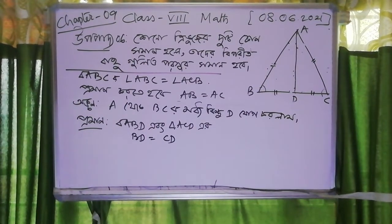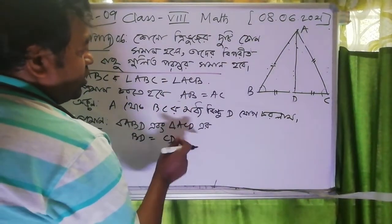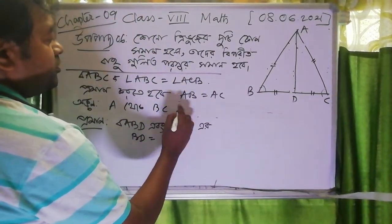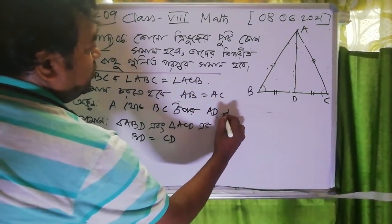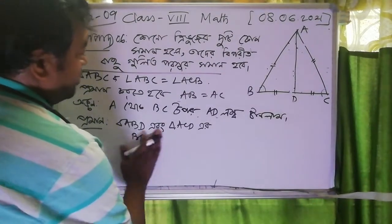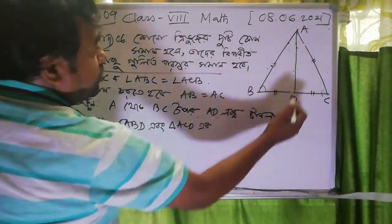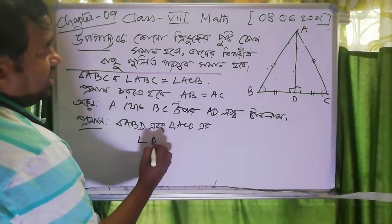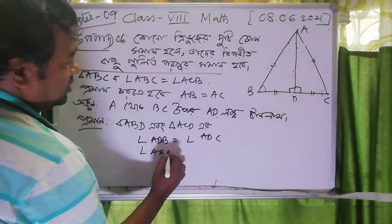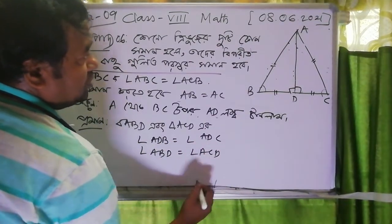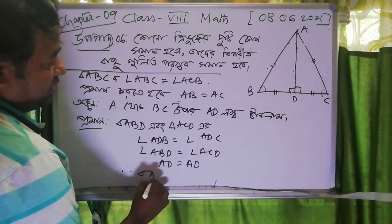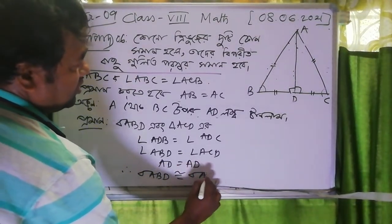We have to look at the angle of the side. We can use BD and CD. The long term is simply BD and ETA. Angle ADB and ADC — angle ADC is congruent. Therefore, triangle ABD is congruent to triangle ACD.